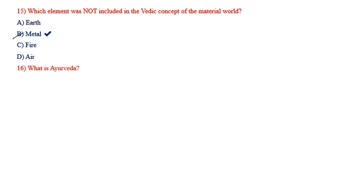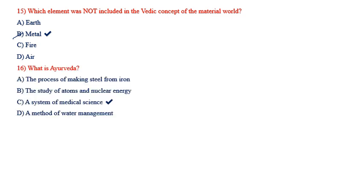What is Ayurveda? Options: the process of making steel from iron, the study of atoms and nuclear energy, a system of medical science, a method of water management. The correct answer is Option C — a system of medical science.